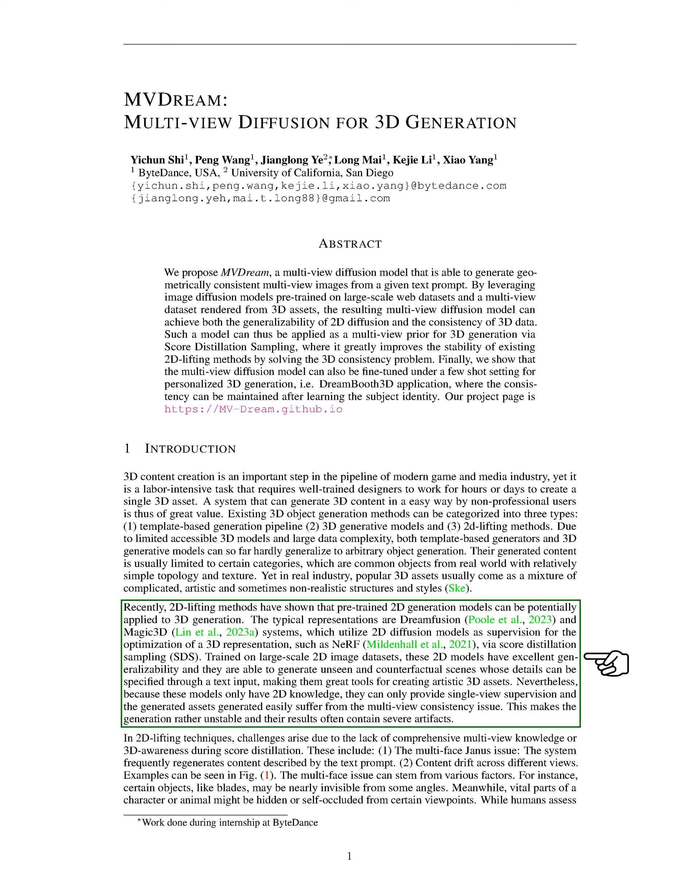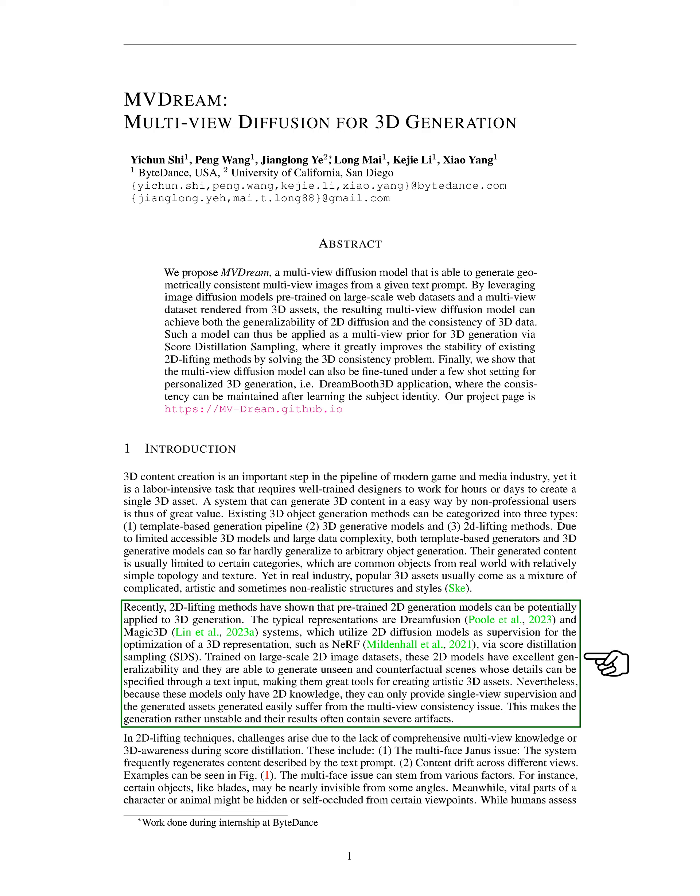However, these models have a significant limitation – they only understand 2D. This means they can only supervise the creation of a 3D asset from a single viewpoint, leading to inconsistencies when the asset is viewed from different angles. This can result in unstable generation and severe artifacts. In 2D lifting techniques, challenges arise due to the lack of comprehensive multi-view knowledge or 3D awareness during the optimization process. These challenges include the multi-face Janus issue, where the system repeatedly generates content described by the text prompt, and content drift across different views.